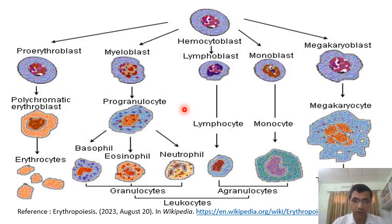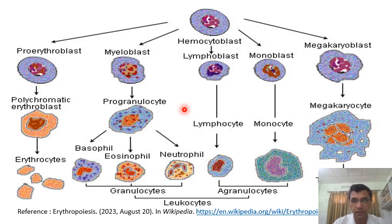Basically, blood has approximately 55% plasma, and the rest of the blood is formed elements at 45%. Under these formed elements, the RBC — red blood corpuscles — white blood corpuscles, and platelets exist.